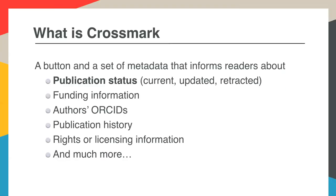First of all, just to cover what the Crossmark service is. Crossmark is made of two elements: it's a button that sits next to your content on your websites, and a set of accompanying metadata that together can tell readers about the publication status of the piece of content — so whether there have been any updates to that piece of content, such as corrections or retractions. But it can also give them lots of other information, such as funding information, authors or ORCIDs, publication history, and so on and so forth. I'll go into a little bit more detail of all of these as we go through today.